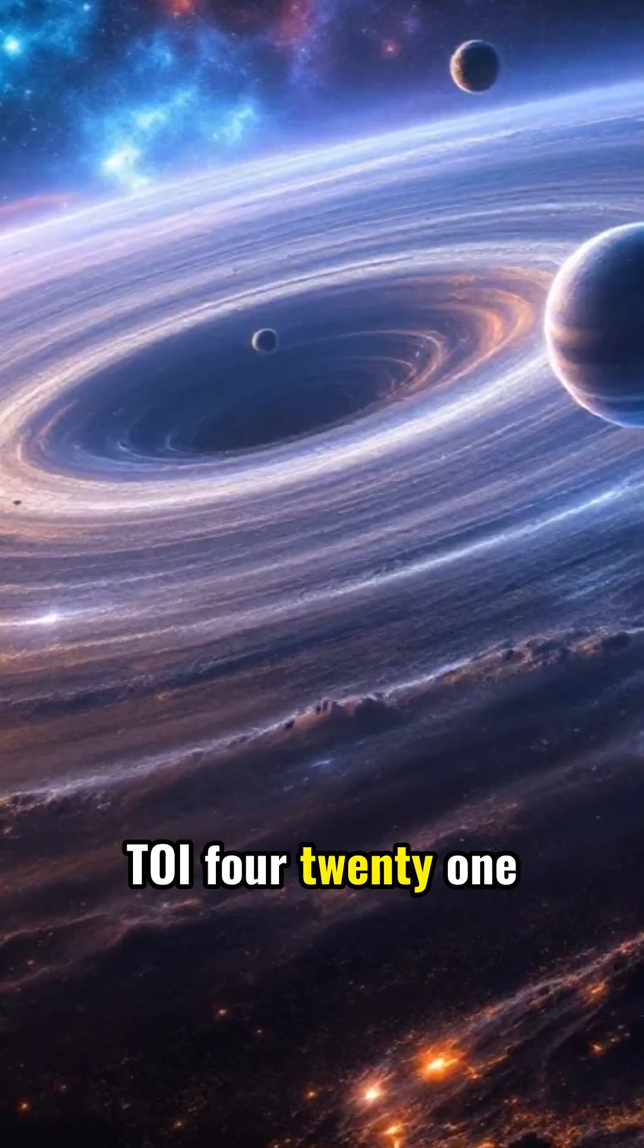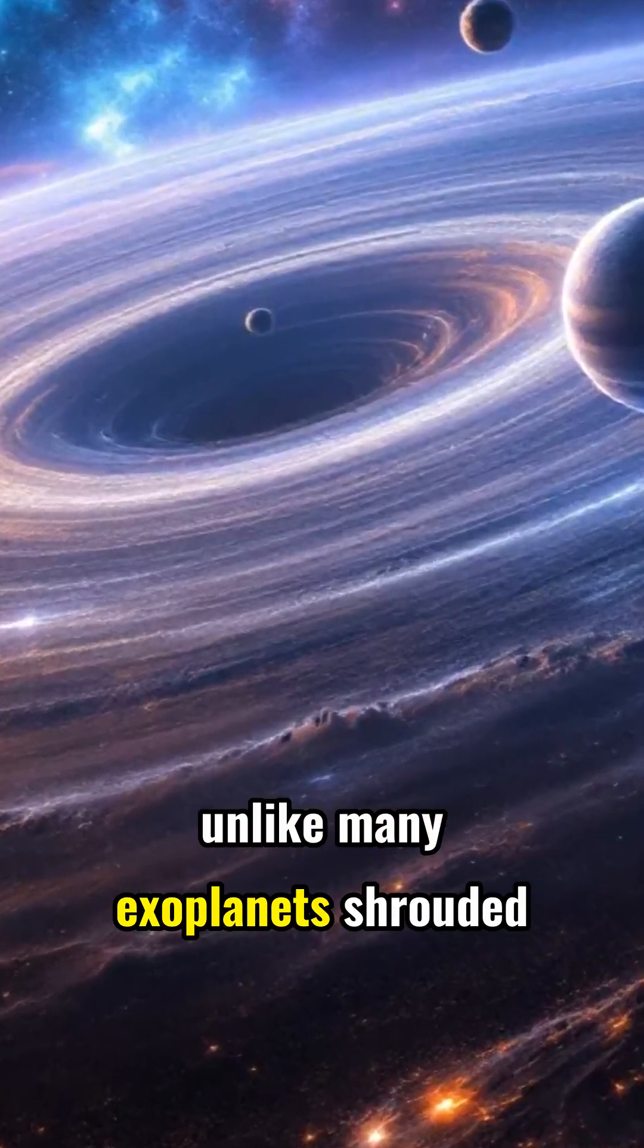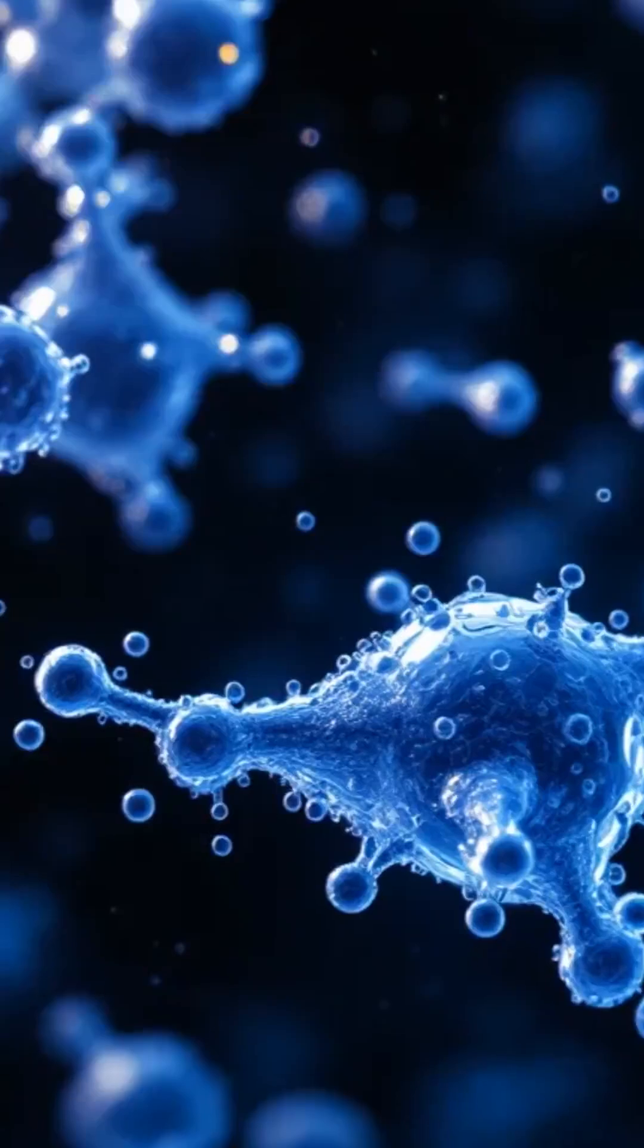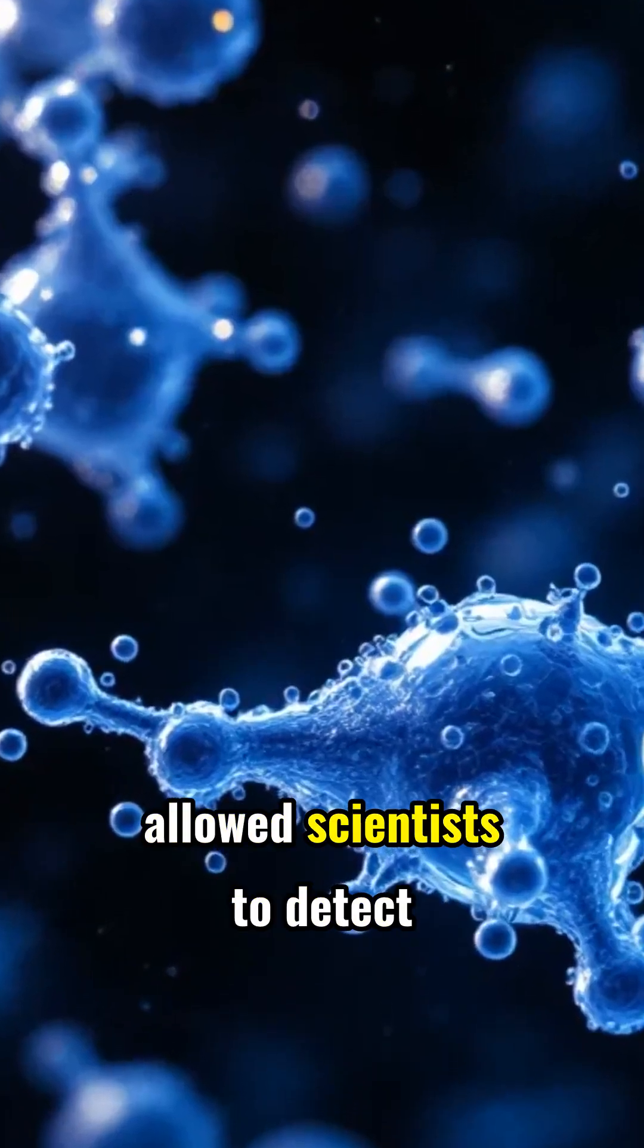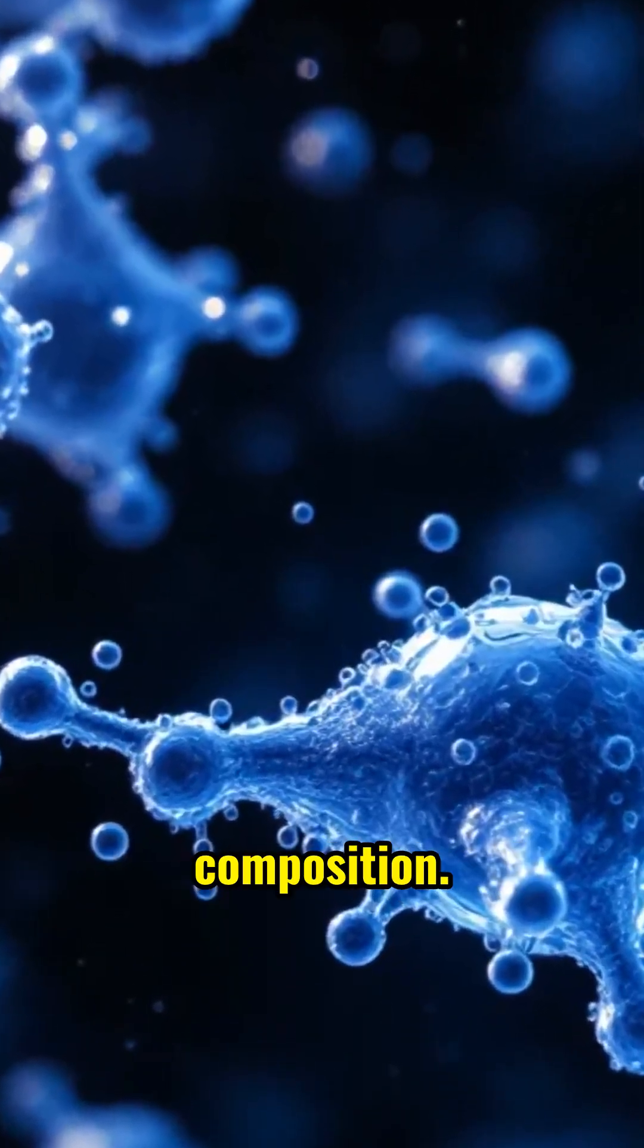Remarkably, TOI-421b features a clear atmosphere, unlike many exoplanets shrouded in haze. This clear atmosphere has allowed scientists to detect water vapor, hinting at the planet's composition.